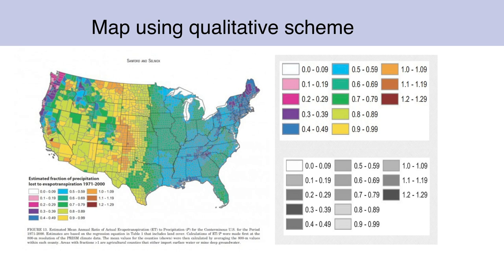What I've done here is just do it in grayscale. You can see 0.7 and 0.8 are very different, and going from 0 to 1.29 we go all over the place in colors — darker, lighter, darker, lighter — so the impression you got from the qualitative scheme is completely false.